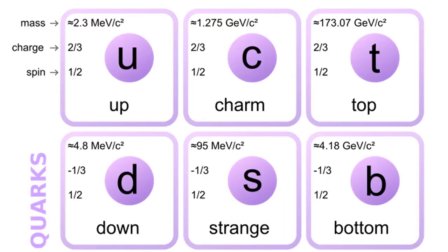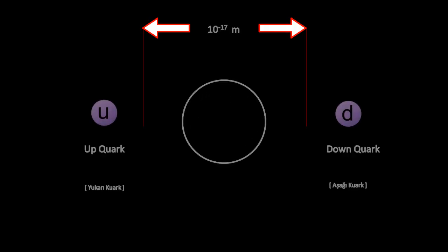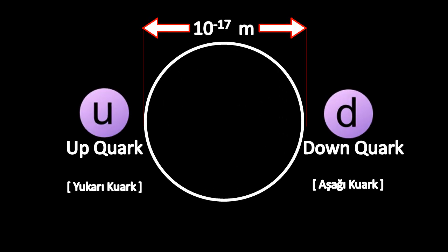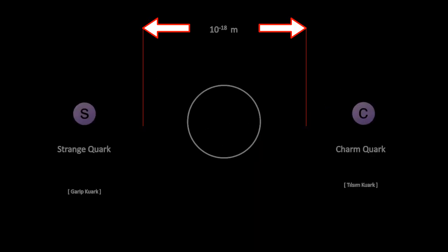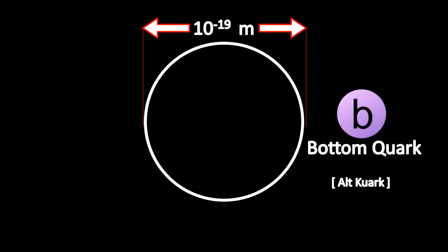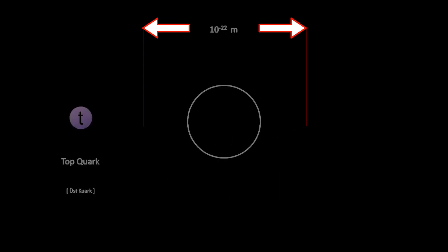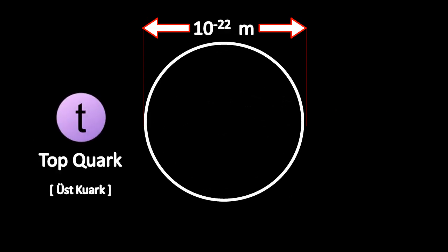Let's look at them from bigger to smaller: up and down quarks, strange and charm quarks, bottom quark, and the smallest one is the top quark. We don't have much idea what's inside the top quark, so let's go to the farthest point we can go.